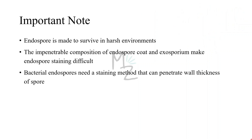The important things to know prior to staining are that endospores are made to survive in harsh environments like desiccation, food scarcity, very high or very low temperatures, and the presence of certain chemicals like disinfectants. That's why they're so strong and have an impermeable composition in their coat, along with an exosporium. Both of these things make the staining of endospores difficult. So we need a staining method with a stain that can penetrate the wall thickness of the spore — that is the Schaeffer-Fulton method.